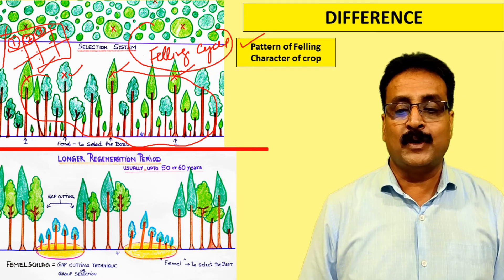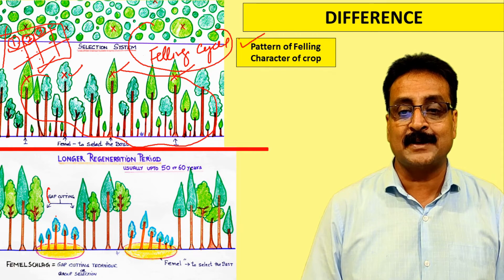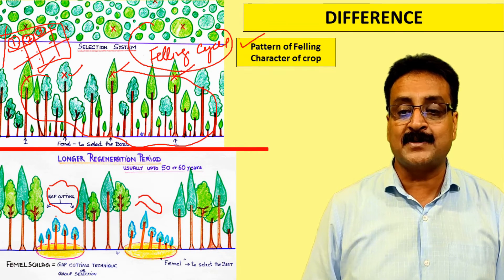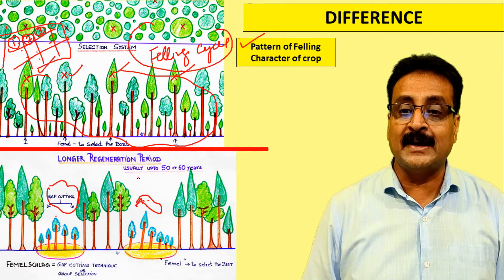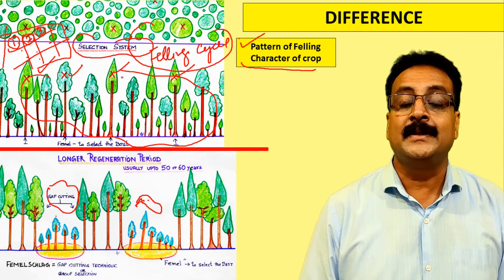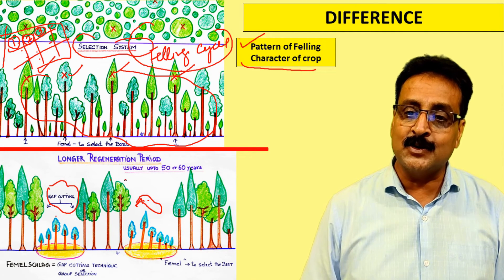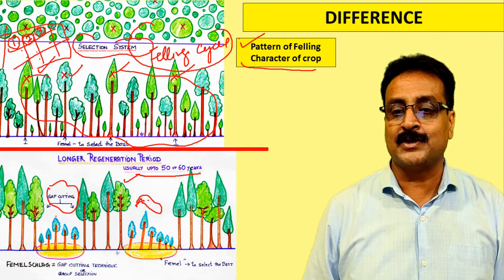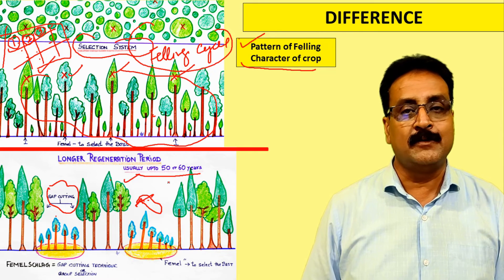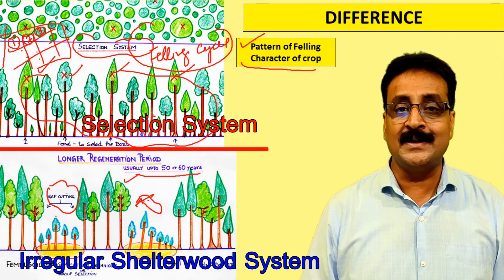In the irregular shelter wood system, felling follows either the Swiss Femal Slag approach of gap clearing by light thinning, or the Baden approach of felling where advanced regeneration already exists — confined to one compartment. Both systems produce uneven-aged crops, but the irregular shelter wood system has a defined regeneration period of 50 to 60 years, whereas in the selection system the felling cycle continues throughout the life of the forest with no fixed regeneration period.